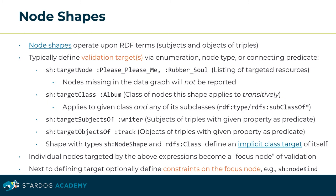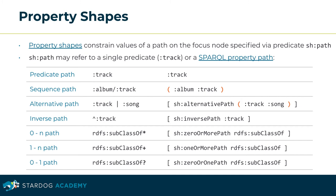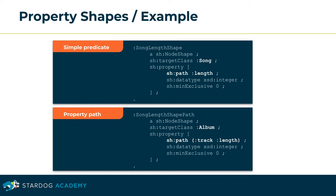Next to specifying a target, node shapes may optionally define constraints on a focus node — for example, to test the kind of the RDF term. The ALBUM class in another example implicitly defines a node shape on its instances. Property shapes constrain values of a path on the focus node specified by the predicate 'path'. This may refer to a single predicate such as 'track' or a SPARQL property path — for example, a sequence, alternative, or inverse path. The anonymous property shapes in this example contrast the validation of a simple predicate path versus a sequence path.